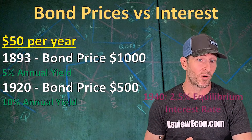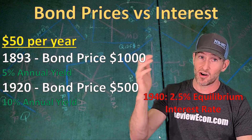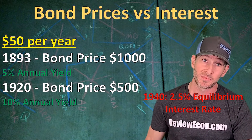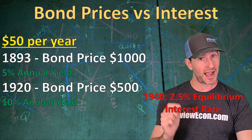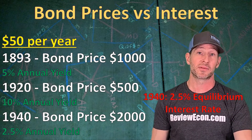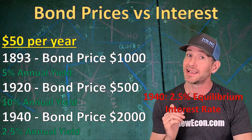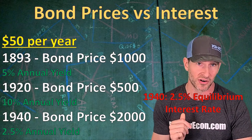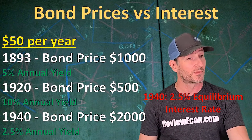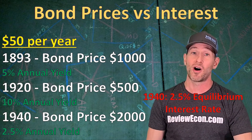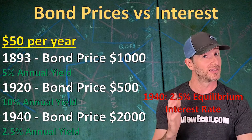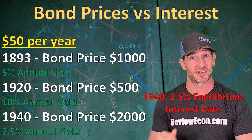Now let's say that in 1940, the equilibrium interest rate falls all the way down to 2.5%. That bond still pays $50 per year. So how is that new lower interest rate going to impact the price of the bond? To bring that yield — the amount that the investor earns on a yearly basis — all the way down to 2.5%, the price of the bond will have to increase all the way up to $2,000, because $50 a year is 2.5% of $2,000.